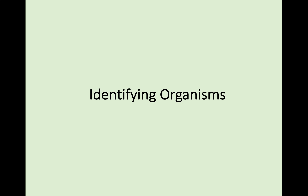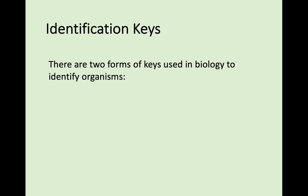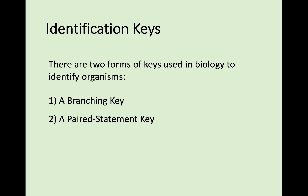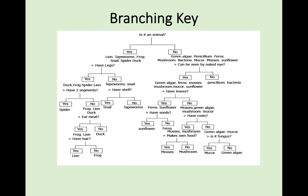Once you've used a pitfall trap or quadrat and collected organisms, you need to identify them. There are two forms of identification keys used in National 5 Biology: a branching key and a paired statement key.